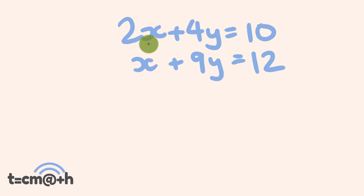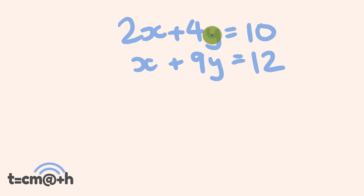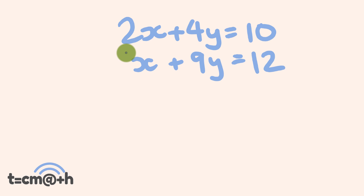In front of the variables we have these numbers which are called coefficients. So the coefficient here — we have a coefficient of 2 in front of the variable x, and a coefficient of 4 in front of the variable y. In front of this one here, where it's not written, we assume that the coefficient is 1 — we just don't write it in. So that's probably what you want to get used to first. The basics are covered on this.